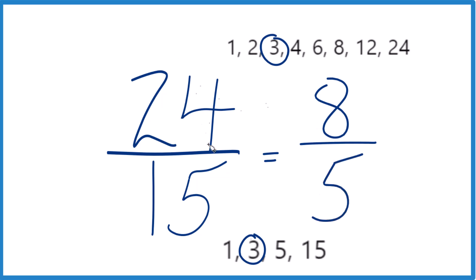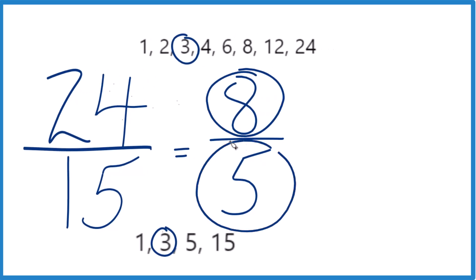So when we simplify the fraction 24 fifteenths, we get 8 fifths. This is an improper fraction - 8, the numerator, is larger than 5, the denominator. Let's write it as a mixed number.